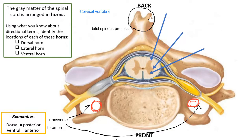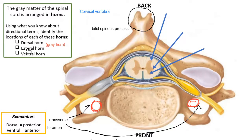Based on that terminology, I can name my three gray horns. The difference between calling it a dorsal horn or a dorsal gray horn is that they're exactly the same thing — gray horn is more specific, giving you the color. The only kind of matter in the spinal cord arranged as a horn is gray matter, so there are no horns in the white matter. When looking at the three horns labeled with arrows, the one closest to the back side is the dorsal horn.